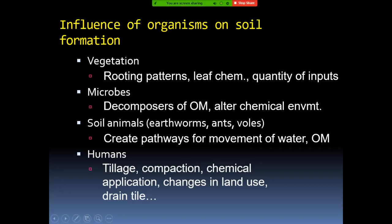For example, when humans till the soil, they are actually mixing the soil — mixing the lower layers with the upper ones. This is a huge impact, changing the level of compaction of the soil, and it can also compact the soil. Humans can also add chemicals to the soil — whether fertilizers, pesticides, or other things — and these chemicals change the chemical properties of the soil. Human activity in irrigation and other practices also contributes to changing the soil significantly.